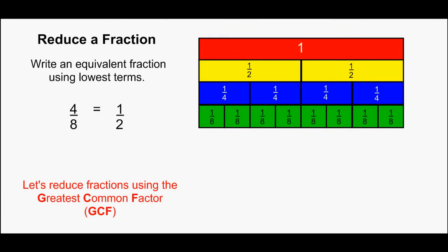Reducing a fraction means writing an equivalent fraction using lowest terms. For example, 4 eighths equals 1 half.